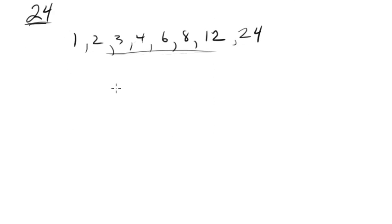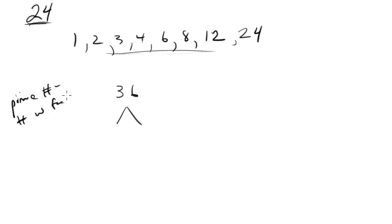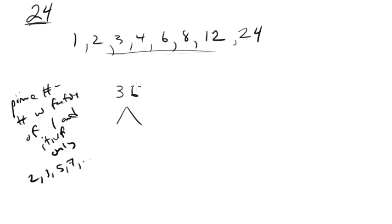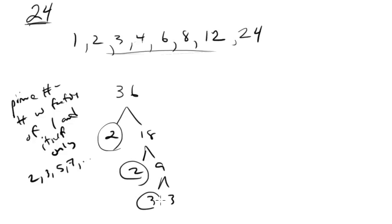Another way you can do this is by using what's called a factor tree. This is for finding the prime factors of a number. A prime number is a number with factors of 1 and itself only — examples would be 2, 3, 5, 7, etc. So for factor trees, I'll start by dividing by 2: 2 goes into 36 leaving 18, then 2 goes into 18 leaving 9, and then 9 is 3 times 3. So the prime factors are 2, 2, 3, and 3.